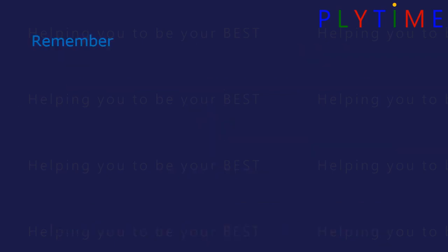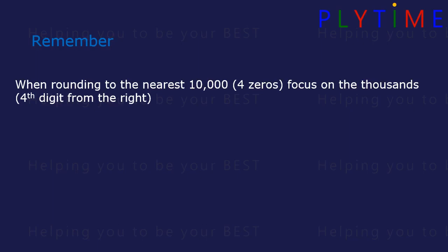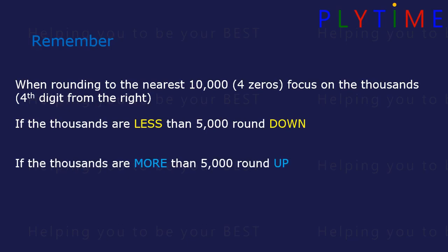Remember when rounding to the nearest 10,000, four zeros, we focus on the thousands, the fourth digit from the right. If the thousands are less than 5,000, we round down. If the thousands are more than 5,000, we round up. If the thousands are exactly 5,000, we also round up.